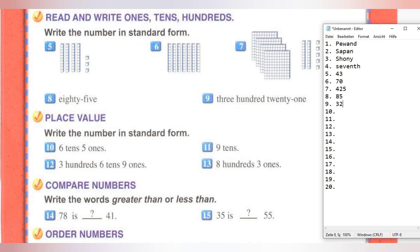85, we can write 85, and 321, easy: 321.